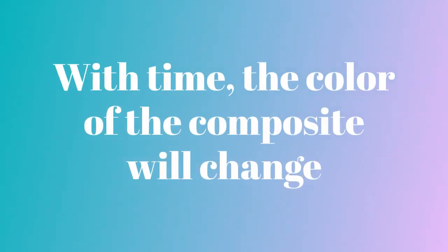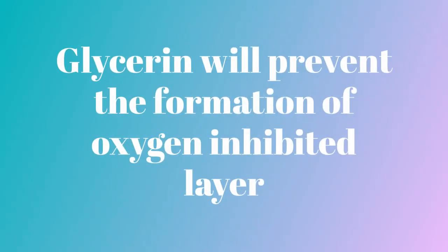What the oxygen inhibited layer does is that with time the color of the composite will change — it will not remain the same. So here comes glycerin: glycerin will prevent the formation of the oxygen inhibited layer.